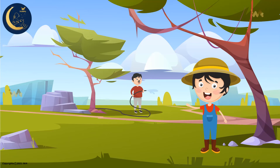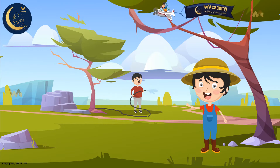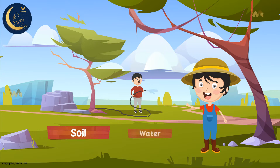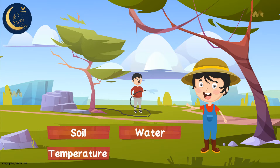All of the plants in our farm need our care and attention. This is why my father spends long hours caring for them. Plants, my friends, always require several factors. These factors are soil, water, temperature, and sunlight. And in the absence of any of these factors, the plants die.